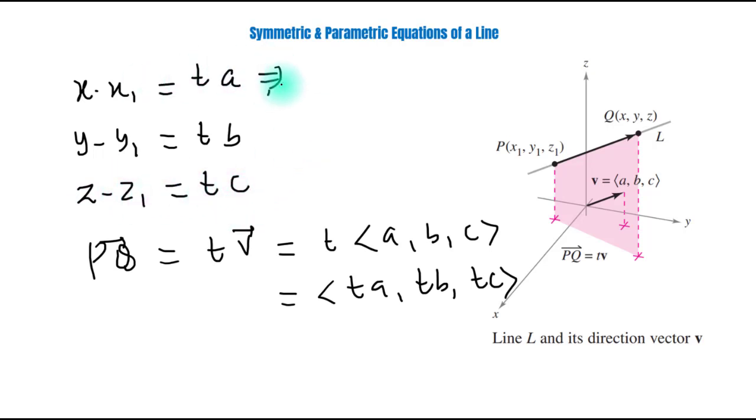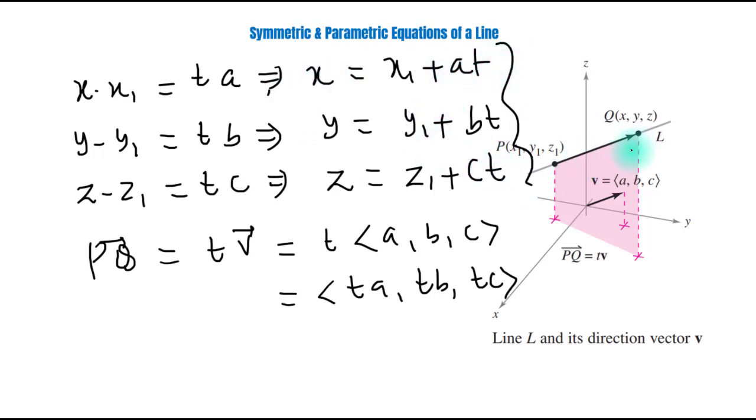This implies x equals x1 plus at, and this implies y equals y1 plus bt, and this implies z equals z1 plus ct. These are called parametric equations of a line.